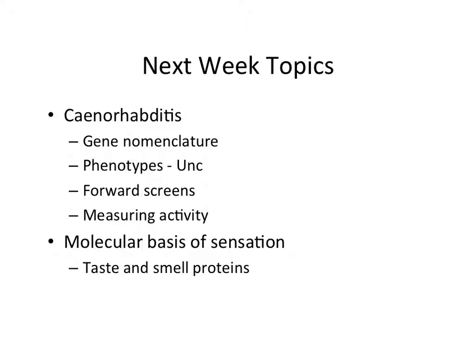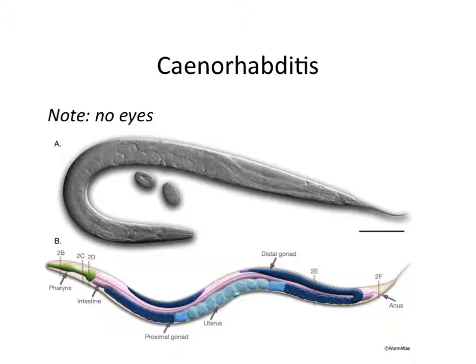Here's C. elegans. We're talking about C. elegans visual sensation. Note: there are no eyes in nematodes. So it's interesting to be reading a paper about their ability to sense light. Do they have photoreceptors? Good question. We're going to find out.